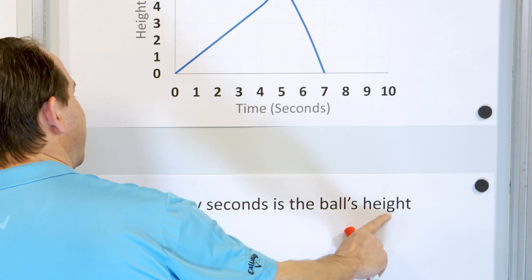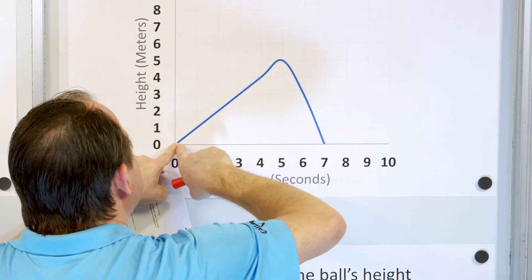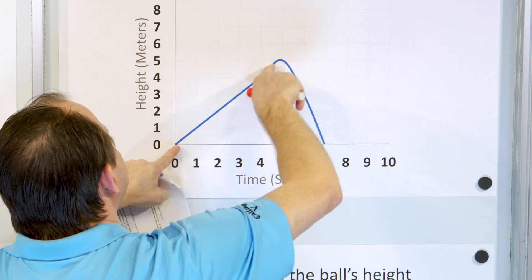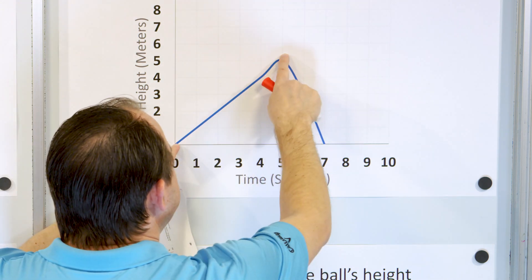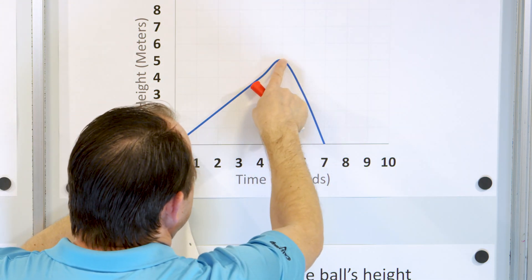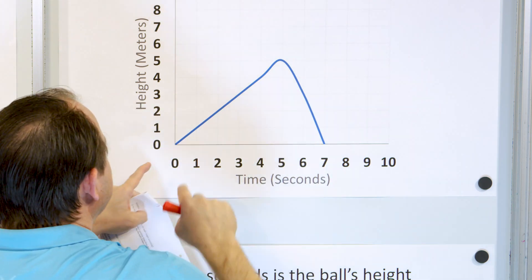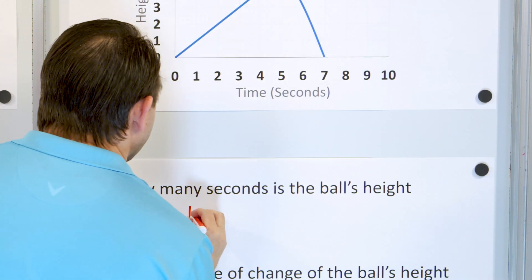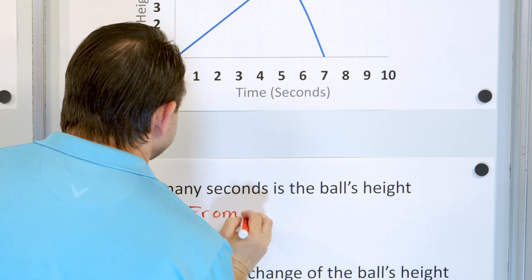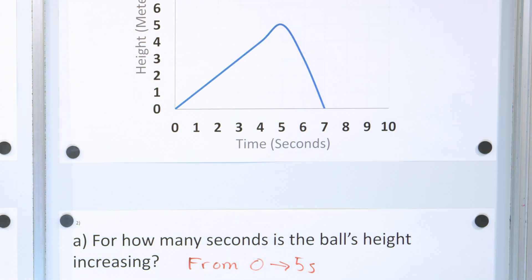Question one: for how many seconds is the ball's height increasing? Here we start at zero and reach some maximum height, and all throughout this part of the journey the height is increasing. From zero seconds all the way to the peak at five seconds. So from zero to five seconds, for basically the first five seconds of flight, the altitude or height of this ball is increasing.